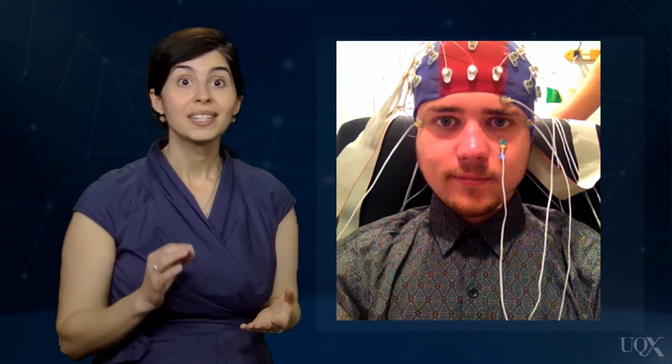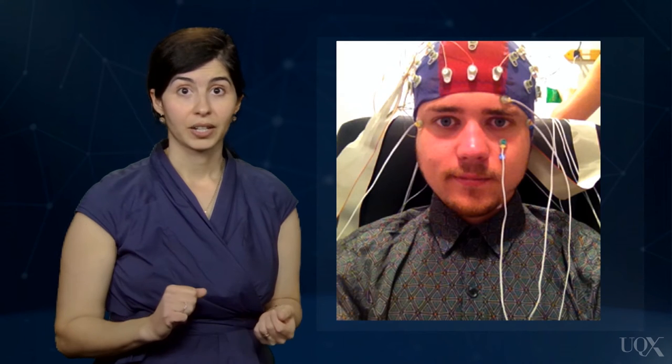If we were able to record your brain activity during this moment of prediction violation, we would see a large deflection in brain waves. To record this, we can use a technique called electroencephalography, or EEG, which measures the electric brain activity generated by the brain when it learns about and interacts with the environment.